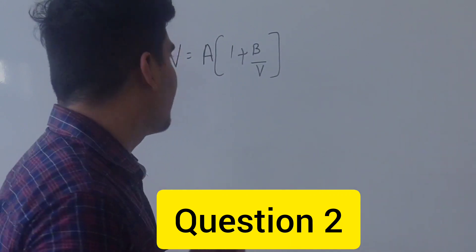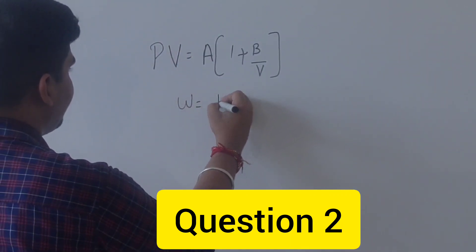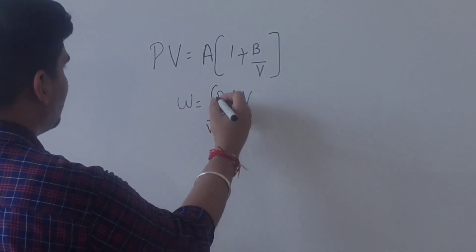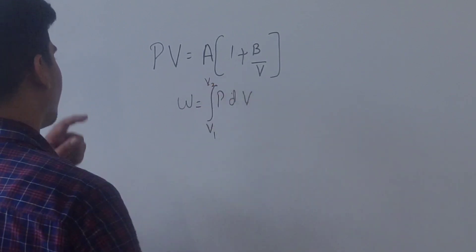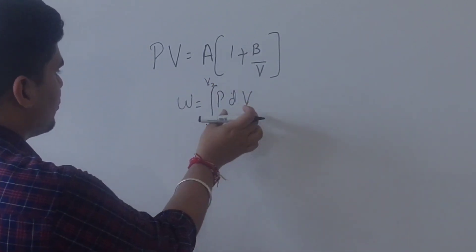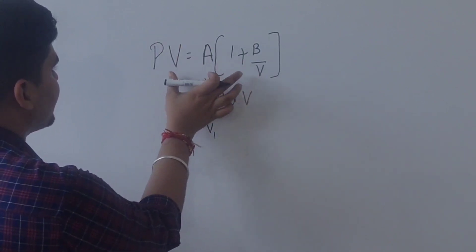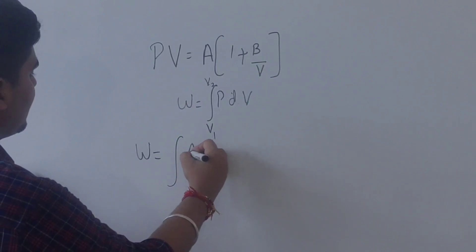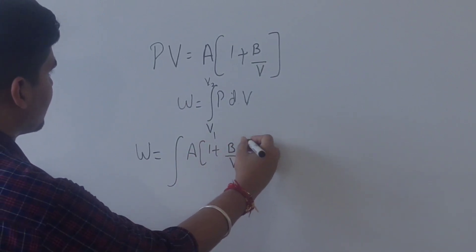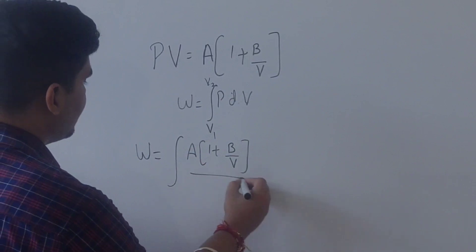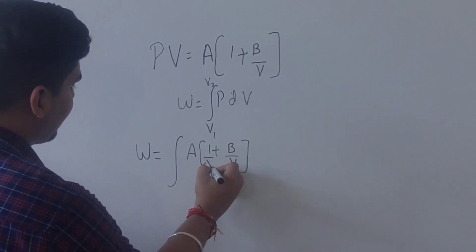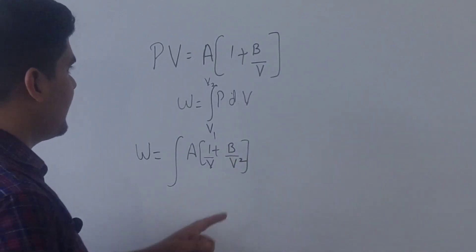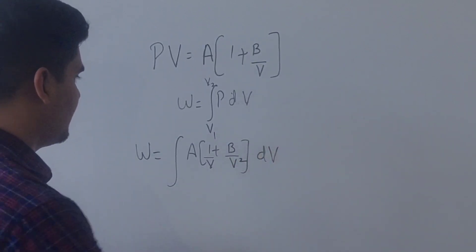So what is work done? We know: integral of P dV from V1 to V2. I will get A natural log V2 by V1 plus, and this is dV. Simple. Now I will get from V1 to V2.